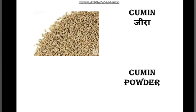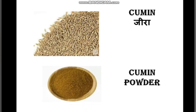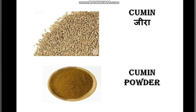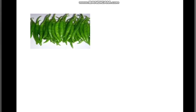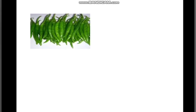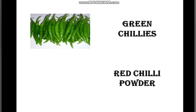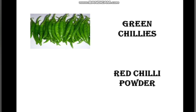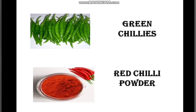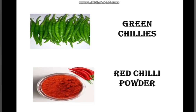Now the next picture is of cumin, which in Hindi is called zira. And this is the picture of cumin in powdered form. Now, chilies — green chilies. And this is the picture of red chili powder.